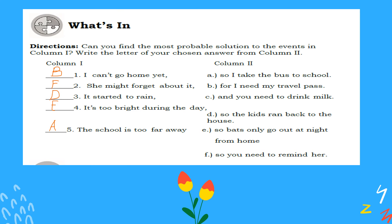Number three, letter D — 'it started to rain, so the kids run back to the house.' Number four — 'it's too bright during the day, so bats only go out at night.' Number five — 'the school is too far away, so I take the bus to school.'